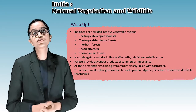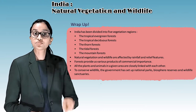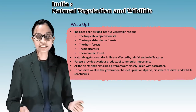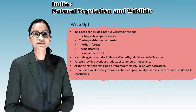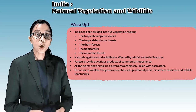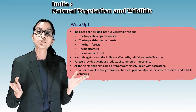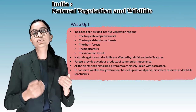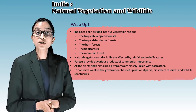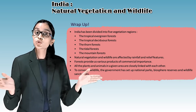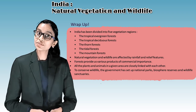Summary: India has been divided into five vegetation regions — tropical evergreen forest, tropical deciduous forest, thorn forest, tidal forest, and mountain forest. Natural vegetation and wildlife are affected by rainfall and relief features. Forests provide us various products of commercial importance, and all plants and animals in a given area are closely linked with each other. To conserve wildlife, the government has set up national parks, biosphere reserves, and wildlife sanctuaries. Goodbye, we will meet in the next class.